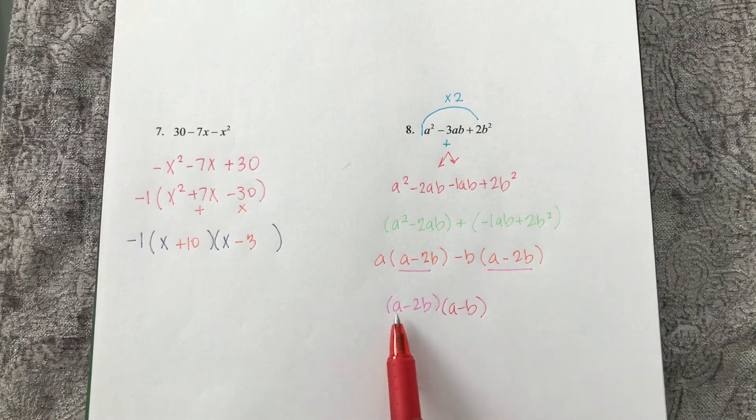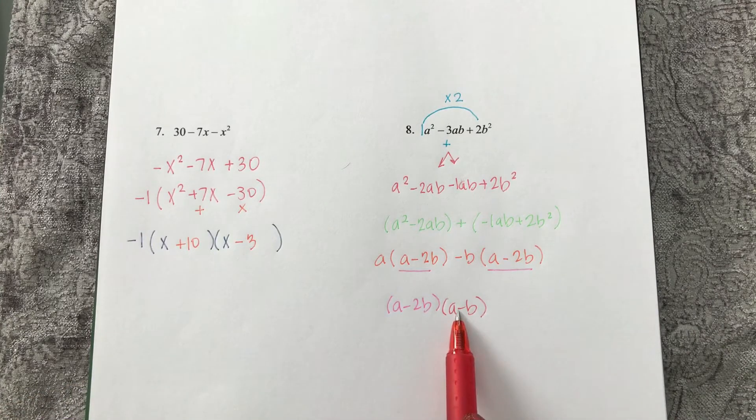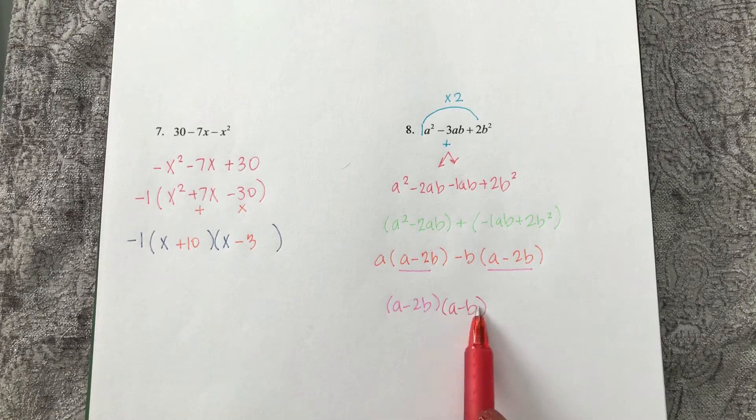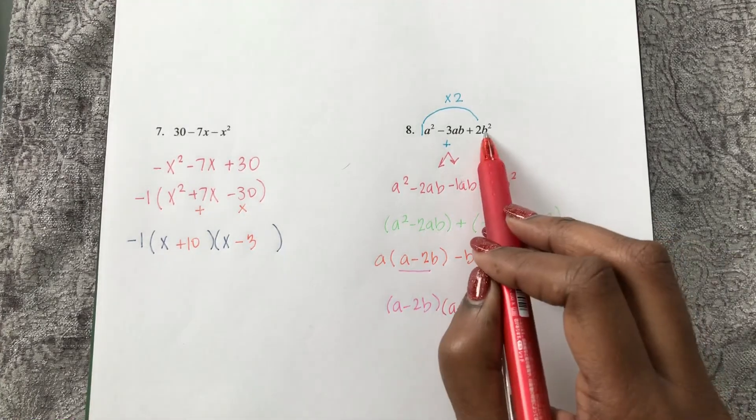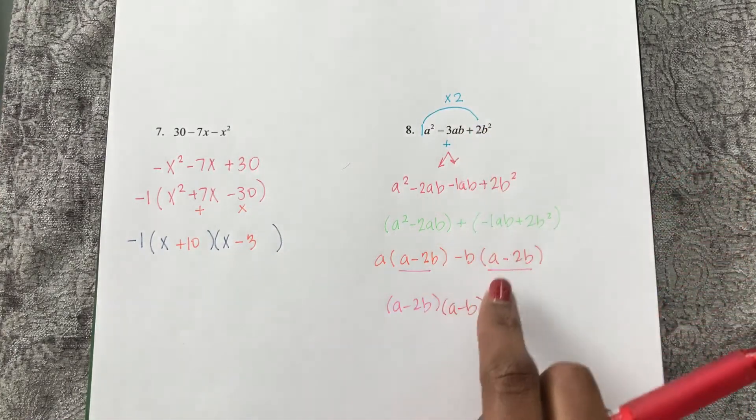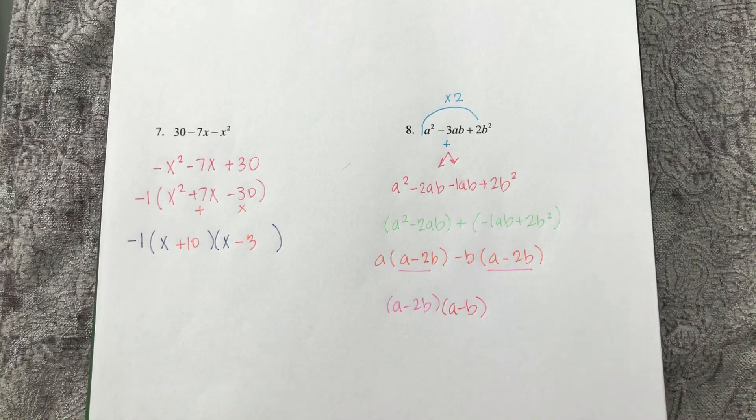So notice it was still a, a, and then minus 2 minus 1, but they just have b's on the end because this term had a b squared. So you could have gone straight from here to here if you see the pattern.